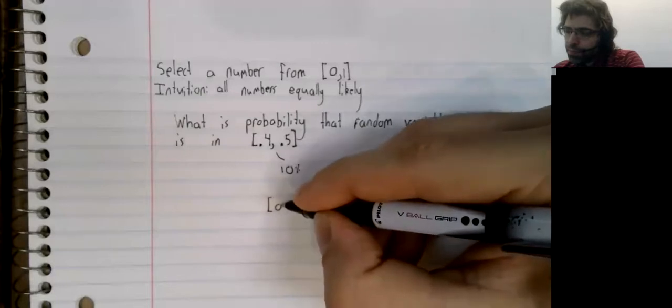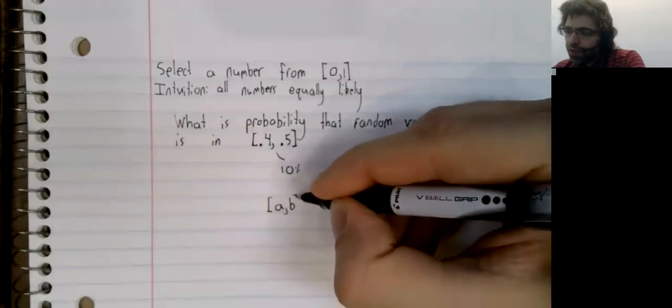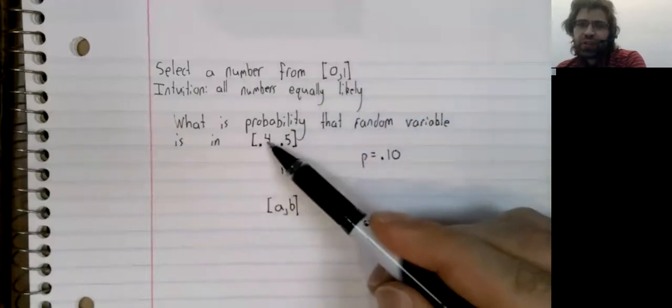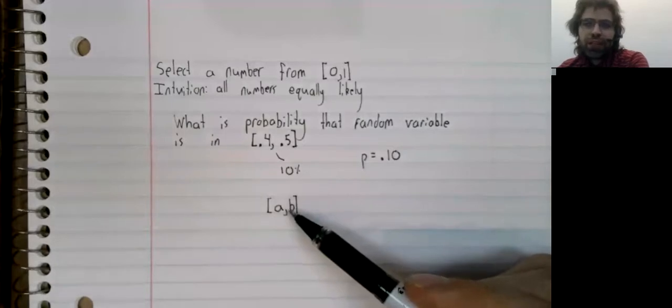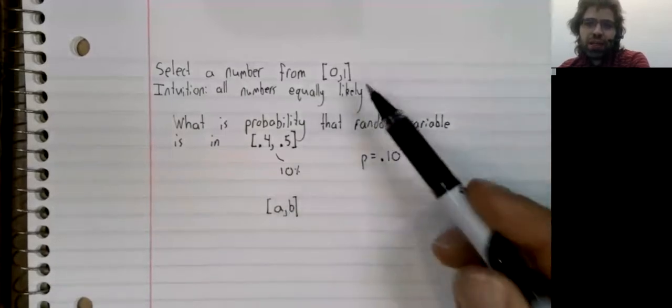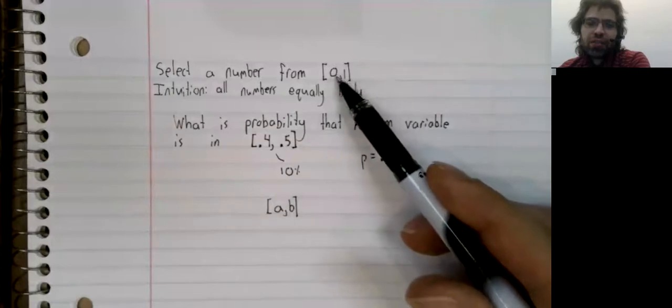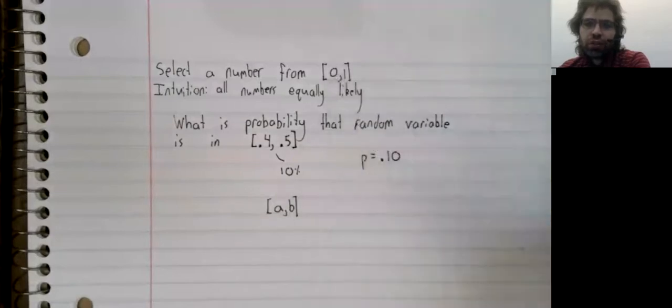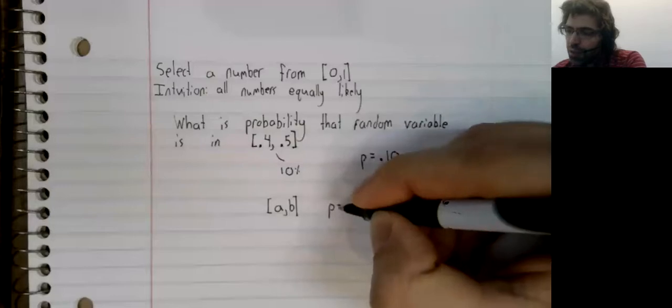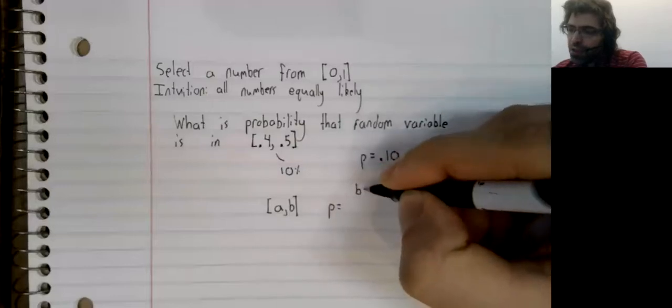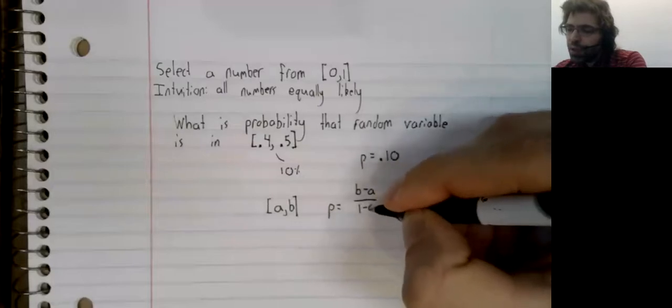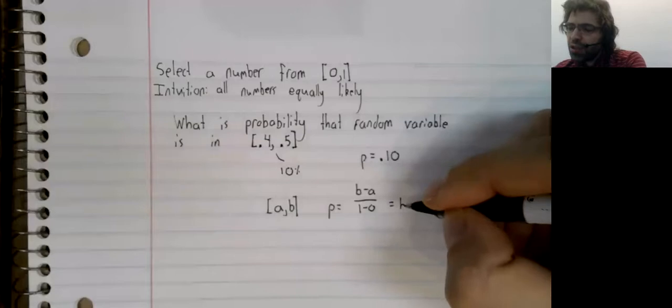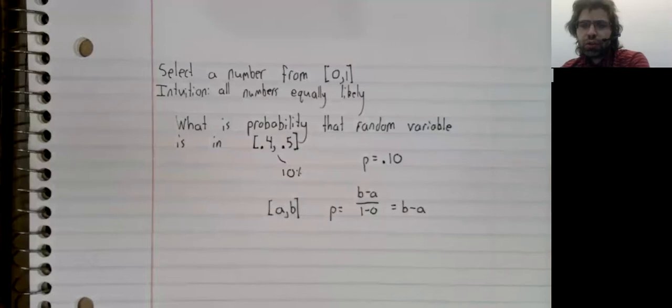In general, if instead of this specific interval, you're looking at just some interval from A to B contained in this larger interval, the probability should be the length of the smaller interval divided by the length of the larger interval.